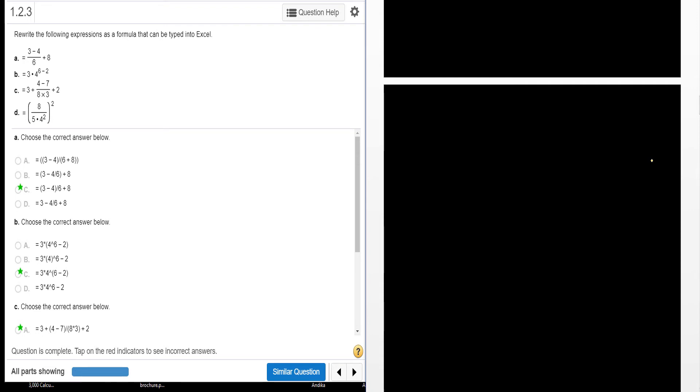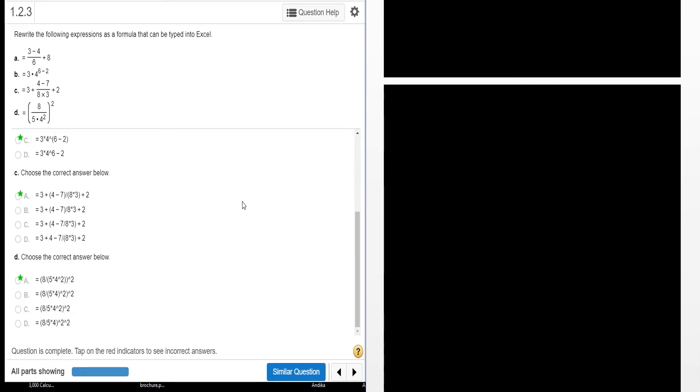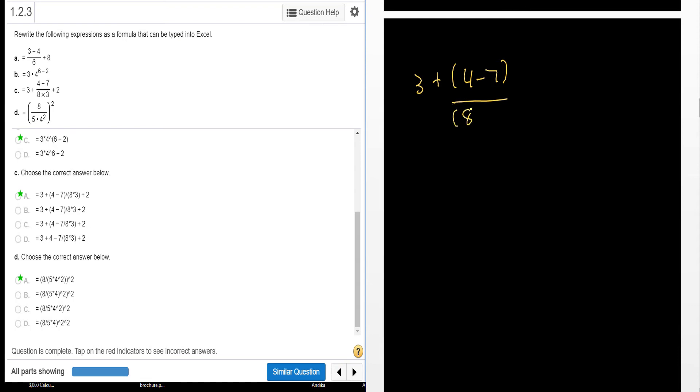I'm looking at C here, and this one here for C, I have 3 plus, and I have to add a parenthesis to the quantity so I know what the numerator is and what the denominator is. 4 minus 7 divided by 8 times 3, close parenthesis, plus 2. So we have to put this on a single line.